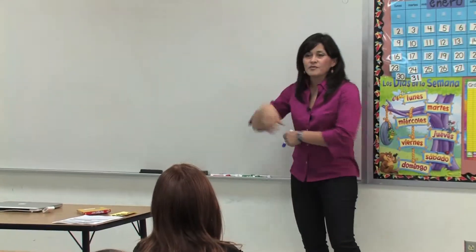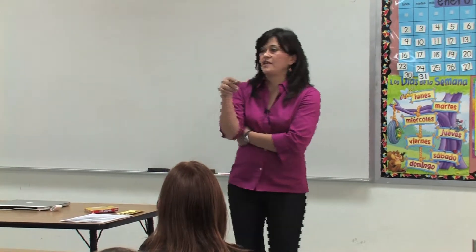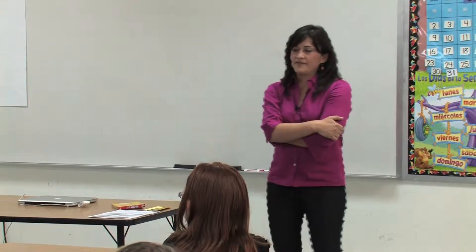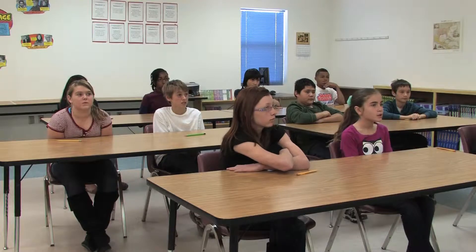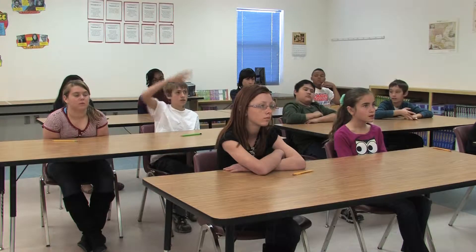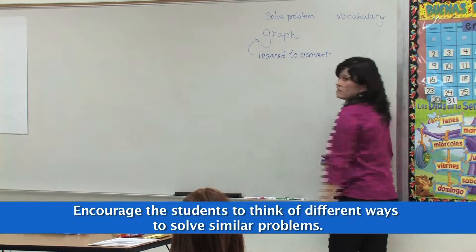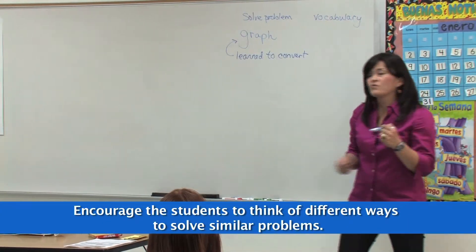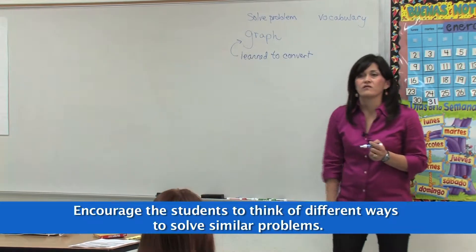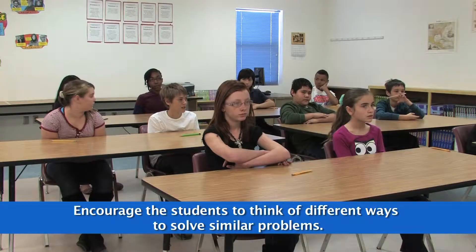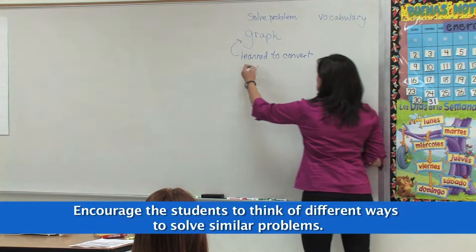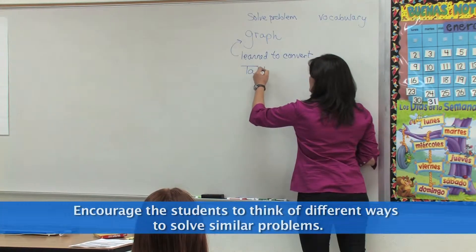How did they solve the problem in the video? They used a graph. Can anybody think of any other way to do it? They learned how to convert the queen's feet into king's feet. How did they figure out how to convert? The graph. Is there any other way they could have learned how to convert? Use a table. They could have used a table — so that's another strategy they could have used.